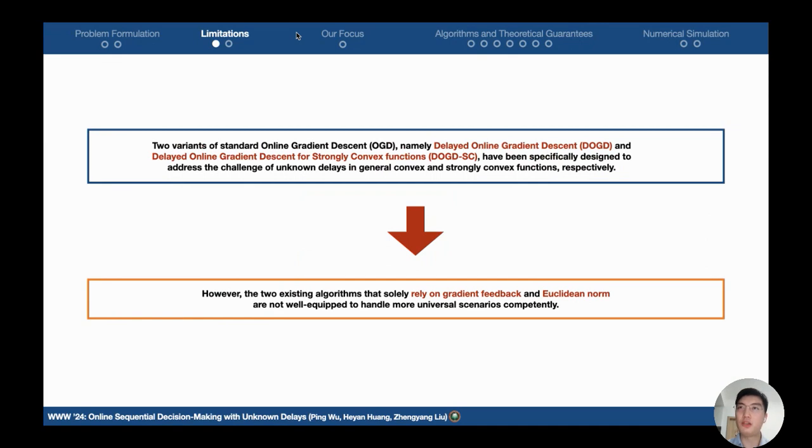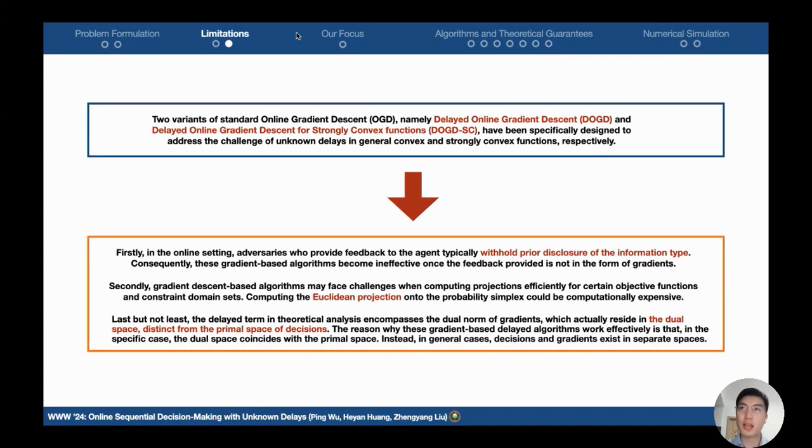Existing algorithms, namely DOGD and DOGD-SC, address the delayed OCO. However, these algorithms rely on gradient feedback and the Euclidean norm and are not well equipped, since the type of the feedback is often unknown and in the universal space. The Euclidean projection is expensive and the primal and dual spaces are not unified.